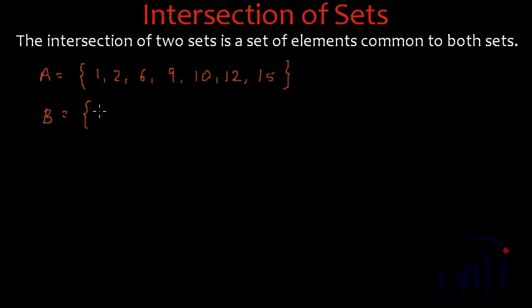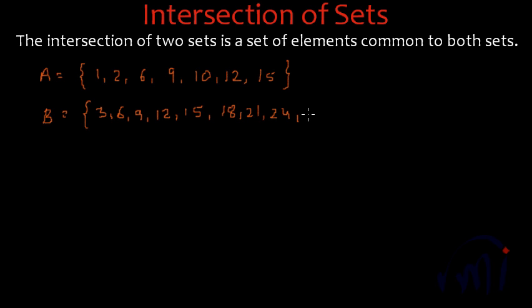If I list down all the multiples of 3, they will be 3, 6, 9, 12, 15, 18, 21, 24 and 27. 30 will not be there because I am talking about all the multiples of 3 which are less than 30. So this will be the set B.